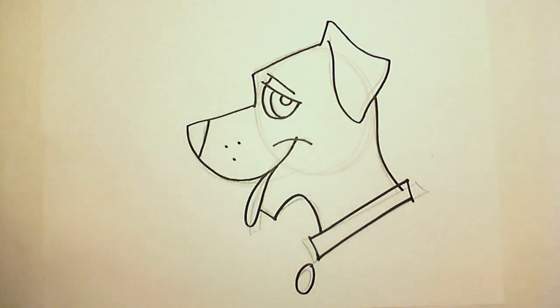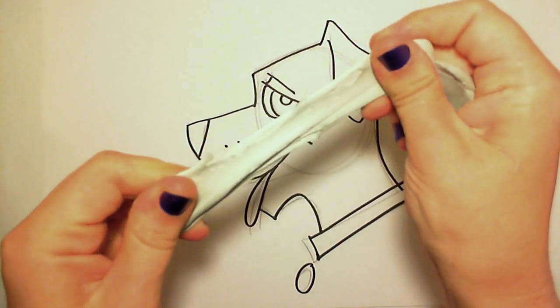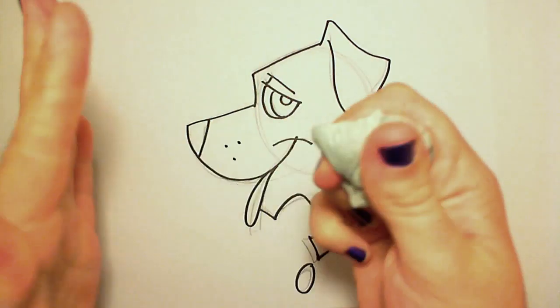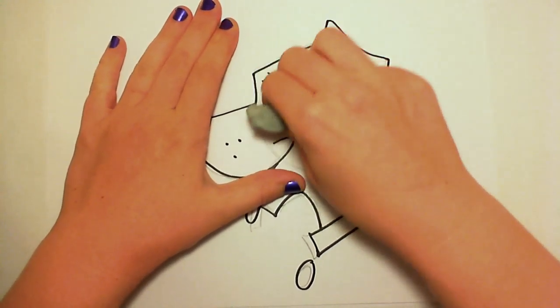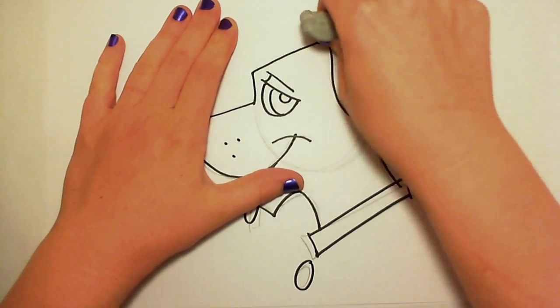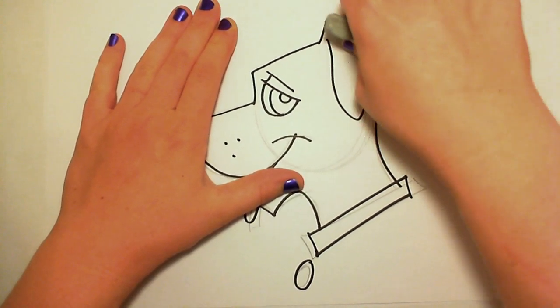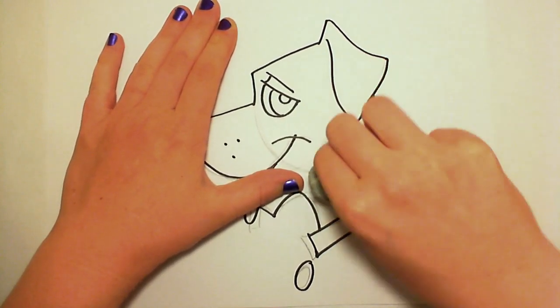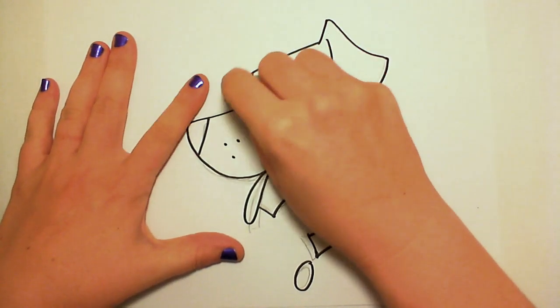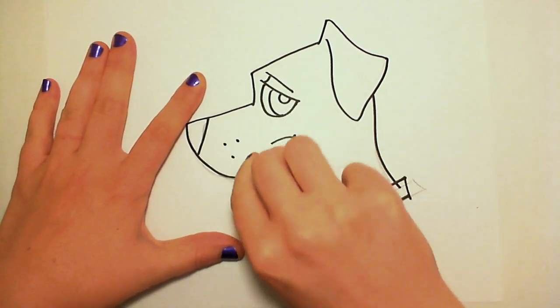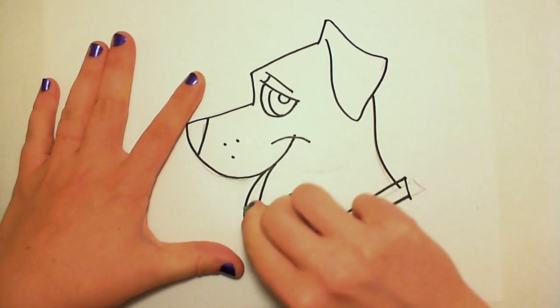Ah, my kneaded eraser. This thing is awesome, guys. You can find it at any arts and crafts store or fine arts store. It's called a kneaded eraser. And what's awesome about it is it is self-cleaning, doesn't leave any dust behind like regular erasers normally do, and it does a pretty good job picking up most of the pencil lid.